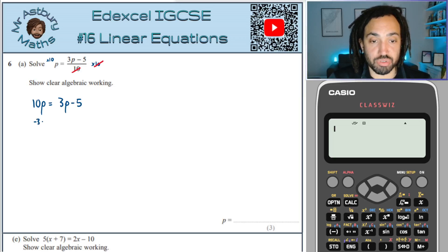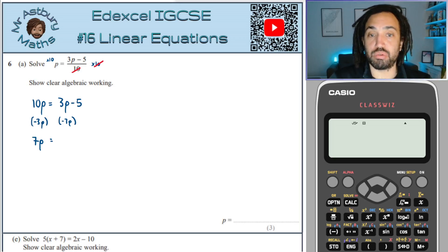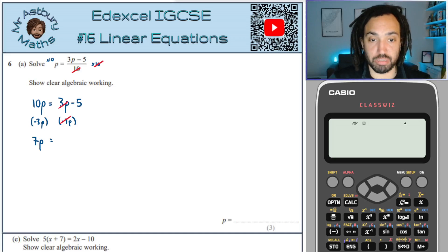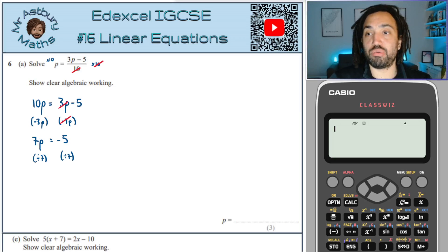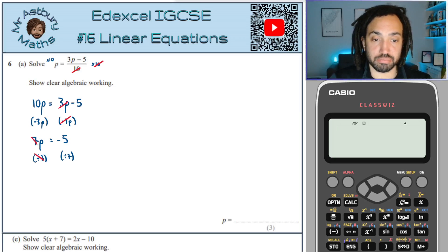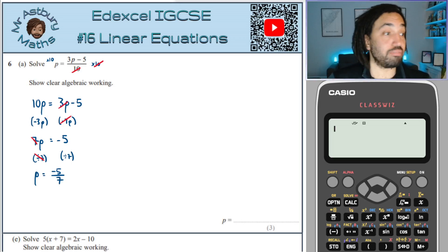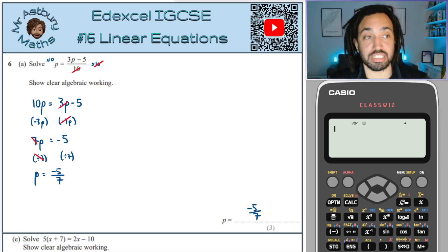Next, what I'm going to do is subtract 3p from both sides and that will give me 7p over here and it will clear out this term, so I'll be left with minus 5. Next job is to divide through by 7 and that will leave me with p is equal to minus 5 over 7. We can leave it like that — no reason to write it as a decimal, that is a lovely way of expressing that number.